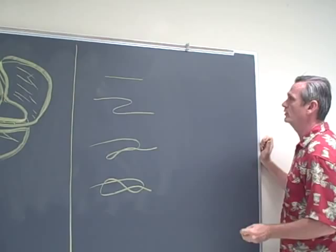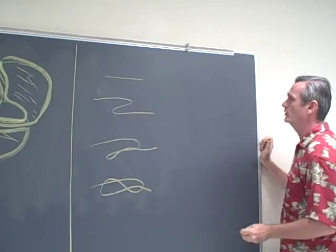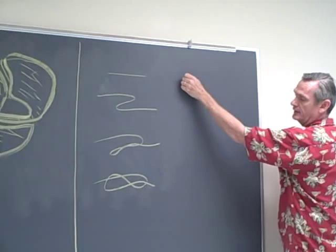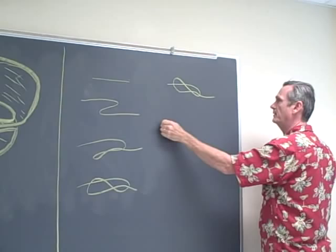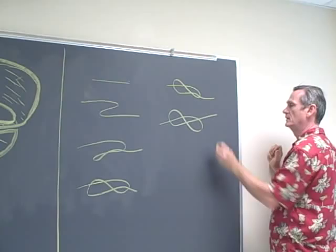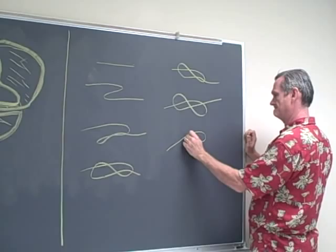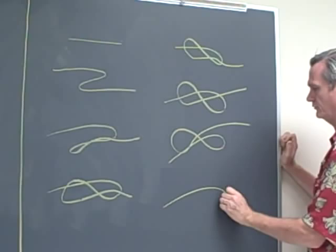Then I'm going to apply a bounce move on the left, like so, and a bounce move on the right, like so. Then a type 3 move. And then a type 2 move, which decreases.